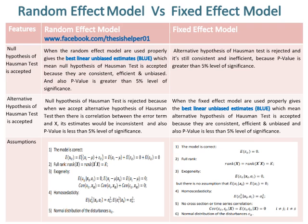When the Fixed Effect Model is used properly, it gives the best linear unbiased estimates (BLUE), meaning the alternative hypothesis of the Hausman Test is accepted because estimates are consistent, efficient, and unbiased, and the p-value is less than 5% level of significance.